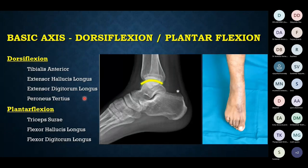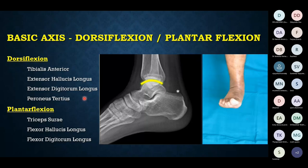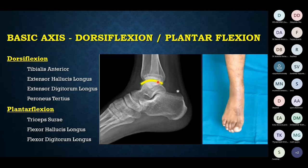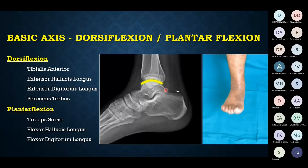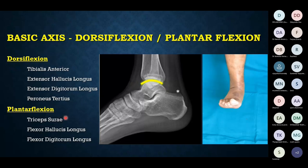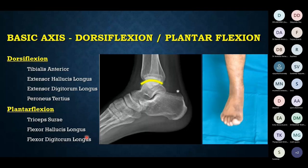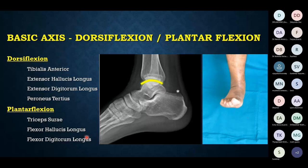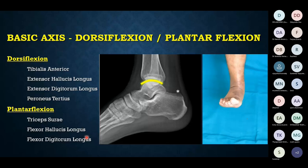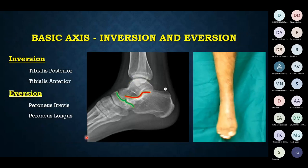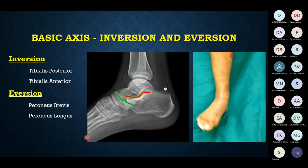The first basic axis of movement is dorsiflexion and plantar flexion, mainly at the talocrural joint. Dorsiflexors are muscles of the anterior compartment including peroneus tertius. Plantar flexion is by superficial and deep compartment muscles — the primary plantar flexors are the gastrosoleus complex, and secondary plantar flexors are flexor hallucis longus and flexor digitorum longus.